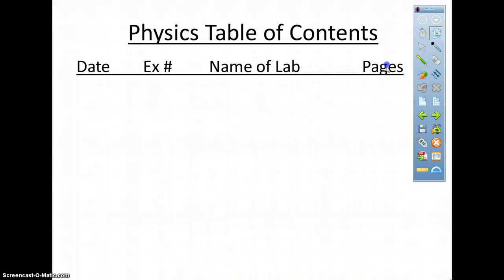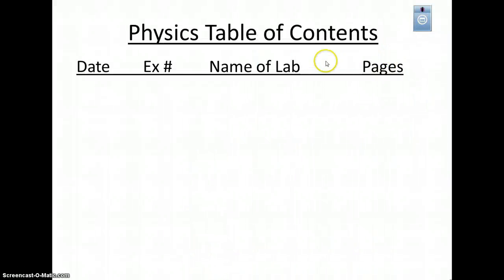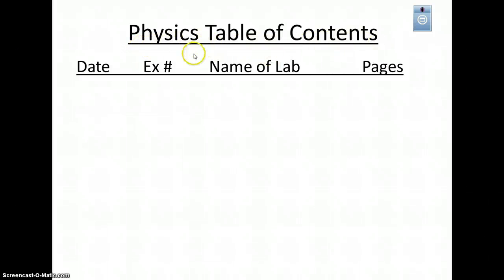Once you do that, just like chemistry, you're going to create a table of contents. When you create the table of contents, please use a straight line, and write 'Physics Table of Contents.' Please write the date, experiment number, name of lab, and pages.